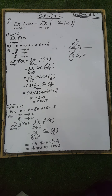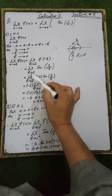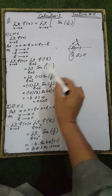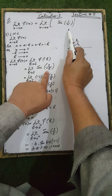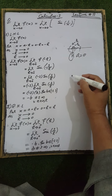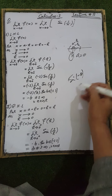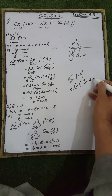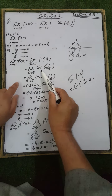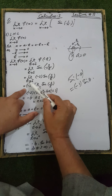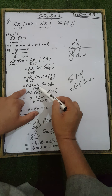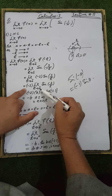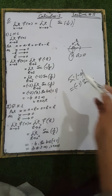This gives the limit as h tends to zero of sine of 1 divided by minus h. Since sine of minus theta equals minus sine of theta, this equals minus 1 multiplied by sine of 1 over h. Since minus 1 is a constant, we push it outside the limit: minus 1 times the limit as h tends to zero of sine of 1 over h.